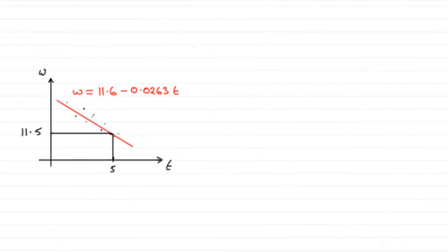Now in this last part, we're told that it was discovered that a coin in the original sample, which was 5 years old, weighed 20 grams and it was a fake. We've got to state, without any further calculations, whether the exclusion of this coin would increase or decrease the value of the product moment correlation coefficient, and give a reason for our answer.